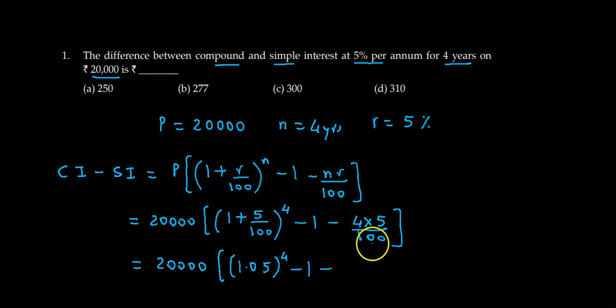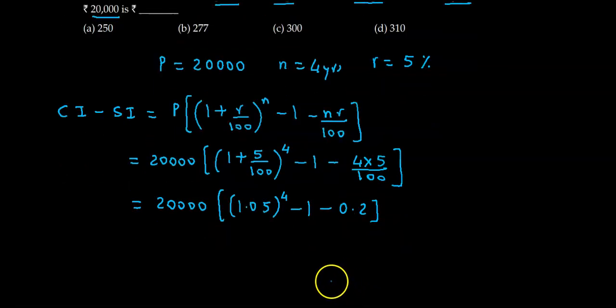...this is 0.2. So we evaluate this value. Here 1.05 raised to 4, then minus 1 minus 0.2, this comes to 0.01550625.